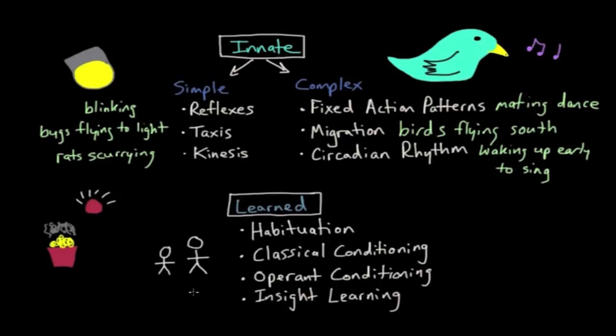That's because you've already learned to add, subtract, multiply, divide, and using those skills to solve the problem. When you finally have some sort of insight or aha moment on how to solve that problem, that would make it insight learning. These are the basic types of learned behaviors, and these are the basic types of innate behaviors.